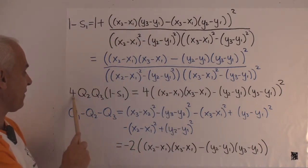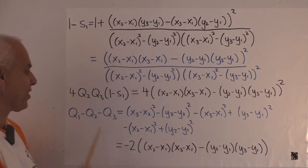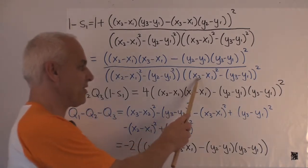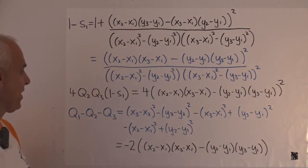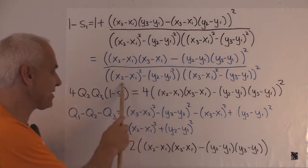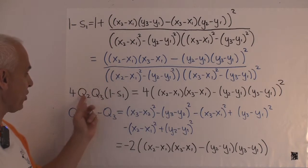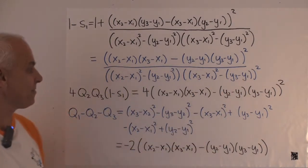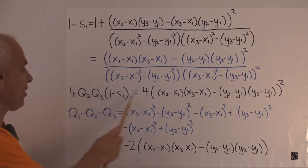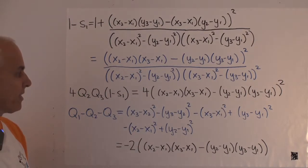So that's the quantity that's appearing on the right side of the cross law. And here is the right side, 4 times Q2 times Q3 times this 1 minus S1. So the Q2 term is this expression right here, the quadrance between A1 and A3. And Q3 is exactly this expression, the quadrance between A1 and A2. So when we multiply this by Q2, Q3, these denominators here cancel. And we have 4 times just the numerator, all this quantity squared. So that's the right-hand side of the cross law.